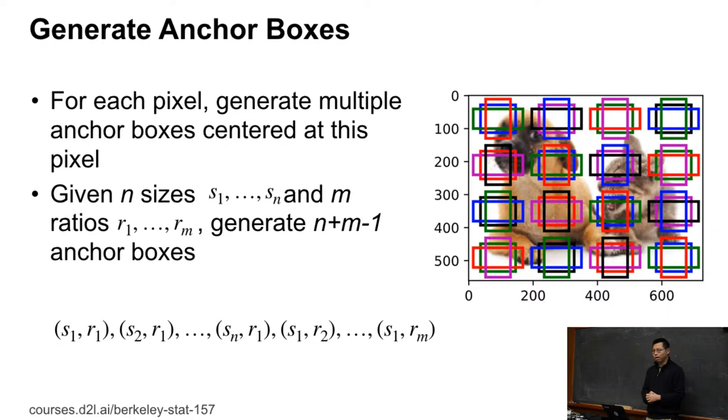The reason why we don't want to do n times m, which means given any size and any ratio we generate anchor boxes, is because it will maybe give you too much. Like if you pick n equal to 10, m equal to 10, it will give you 100 anchor boxes. Which means 100 anchor boxes for every pixel. If it's a 100 by 100 image, you get 10K pixels, another 10K anchor boxes, then you just run out of memory. So this is a trade-off. We just want to vary the size and vary the ratio, and we generate a linear combination of it.